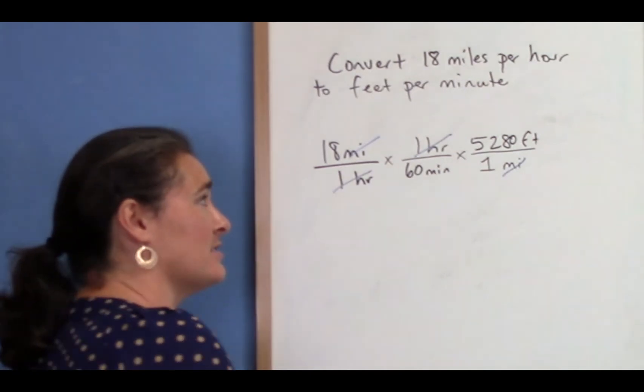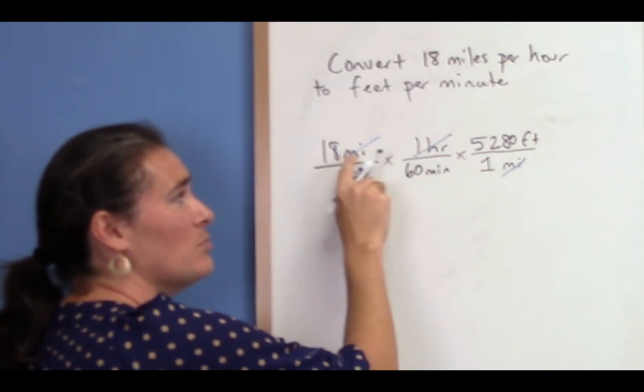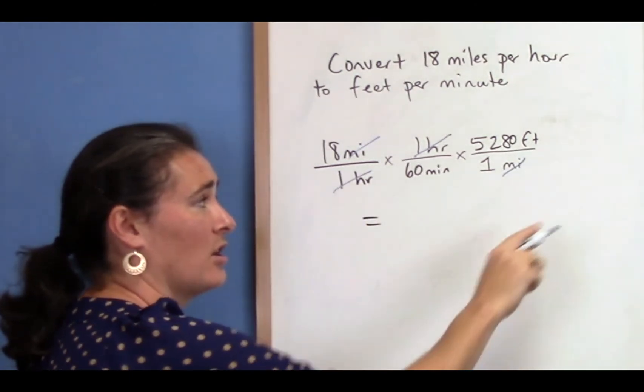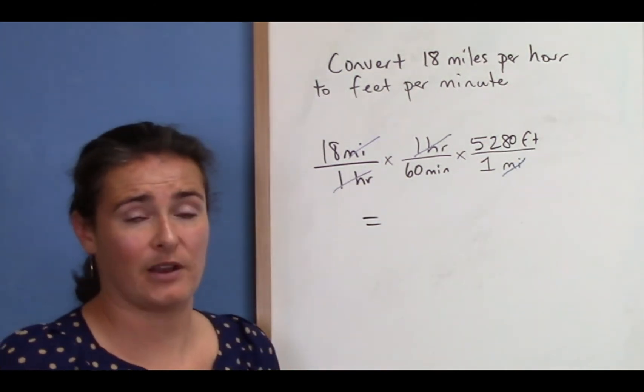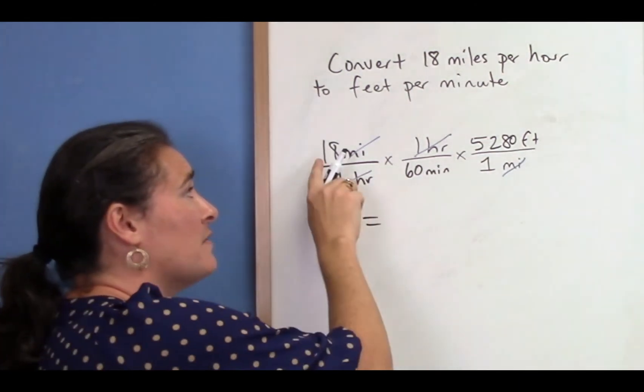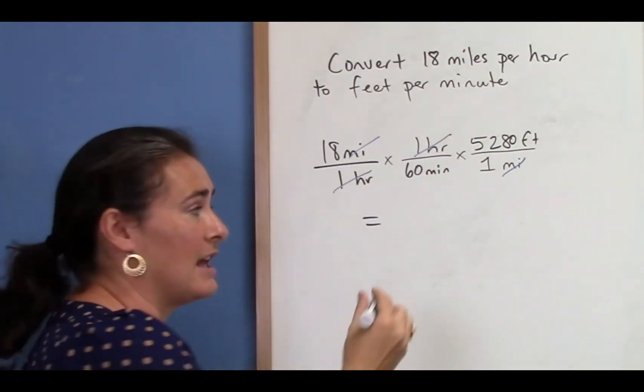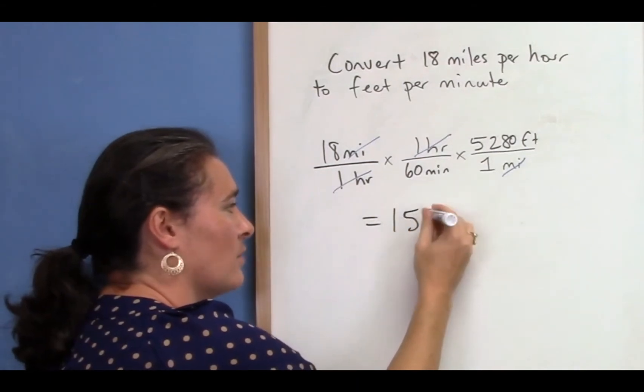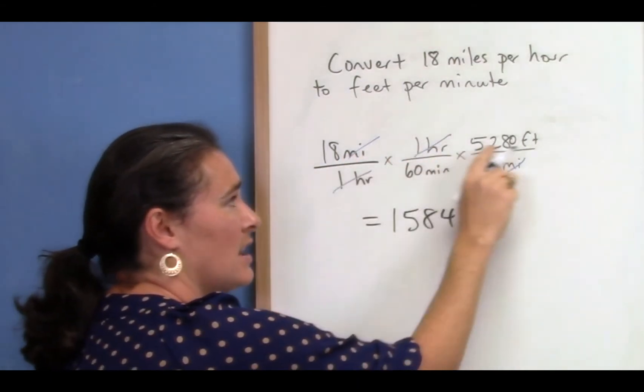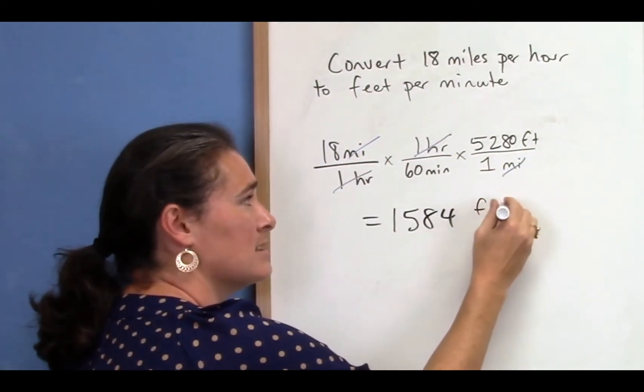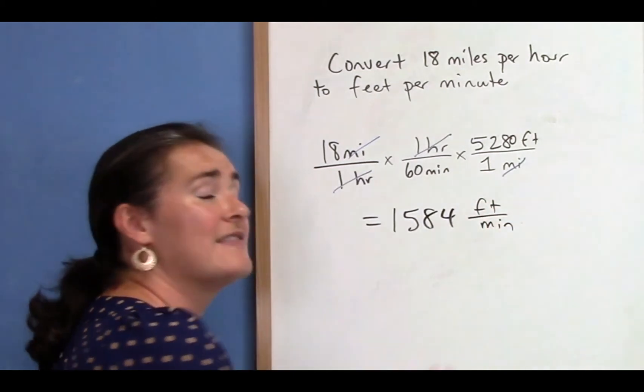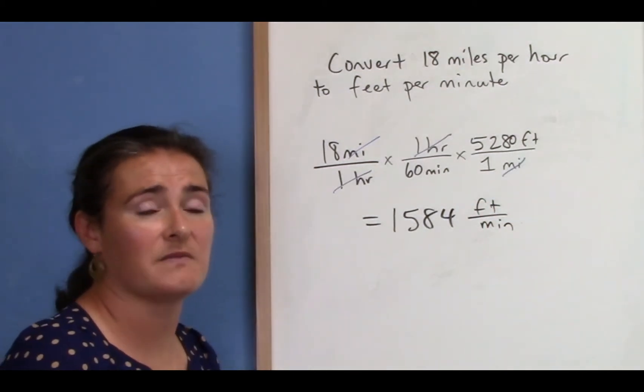So I've set up my dimensional analysis correctly. Now what I want to do is multiply across the top and multiply across the bottom probably using a calculator because these are big values. So if I do 18 times 5,280 then divided by 60 I'm going to get 1,584. And my units on the top are feet and my units on the bottom are minutes. This is called dimensional analysis to convert between units.